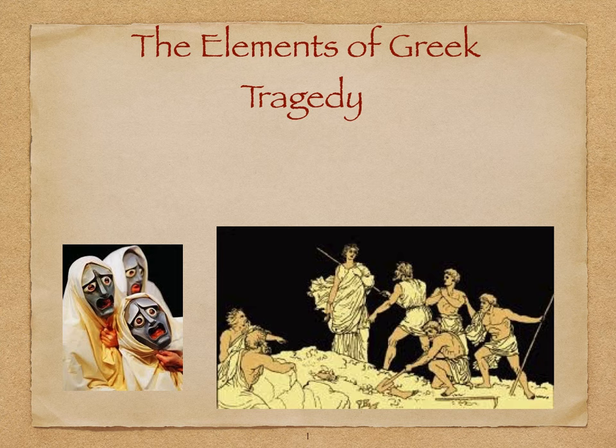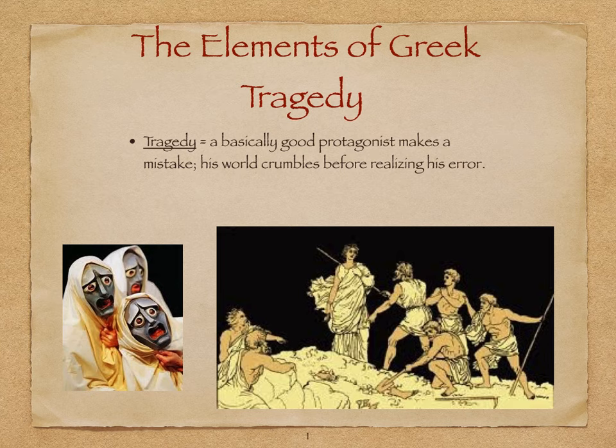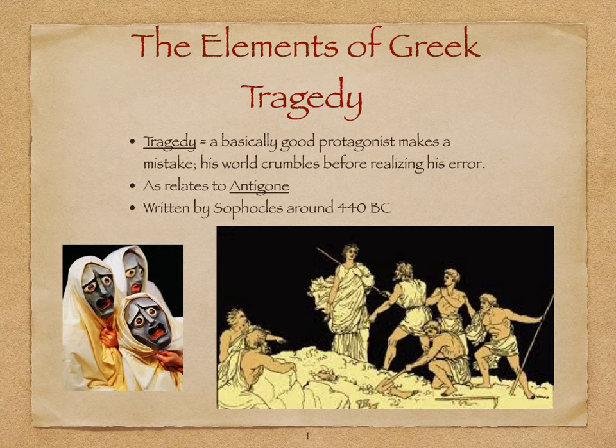Today we're going to have a brief introduction on the elements of Greek tragedy. A tragedy is when a basically good protagonist makes a mistake and his world ends up crumbling before realizing his error. We're going to talk specifically as it relates to the drama Antigone, an ancient Greek play written by Sophocles around the year 440 BC.